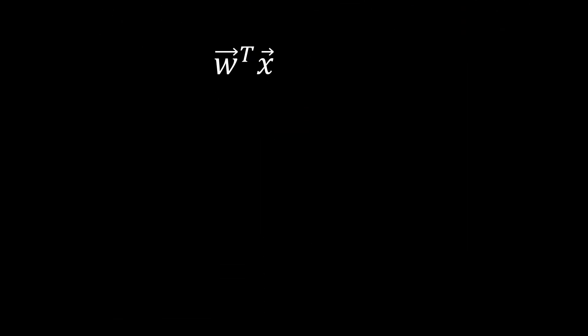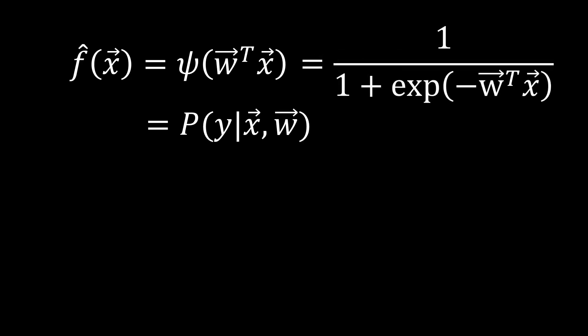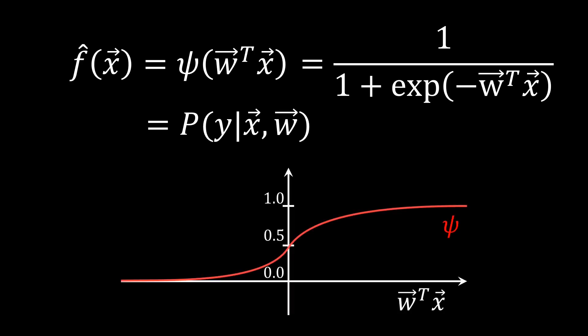The key idea is simple. We take the output of the linear function and squash it through a function psi into the range 0 to 1. We treat this squashed output as a probability. The more a sample x is in the direction of vector w, the higher the probability that sample x is a beer. A function that can achieve this is the logistic or sigmoid function. This function psi approaches 1 if the input tends towards infinity, and 0 if the input tends towards negative infinity. While other squashing functions are possible, we will stick to this function for the rest of the video, as it is the most commonly used.